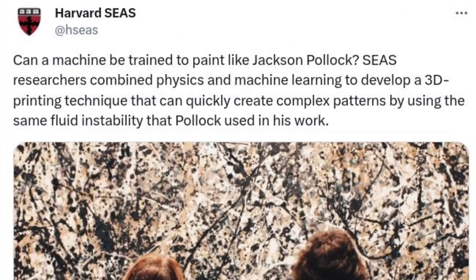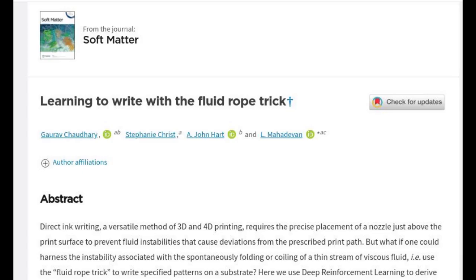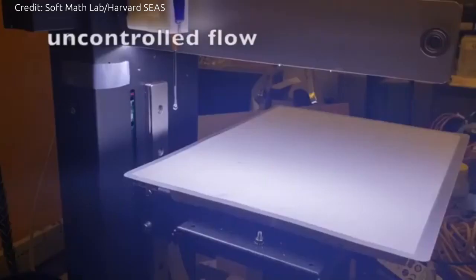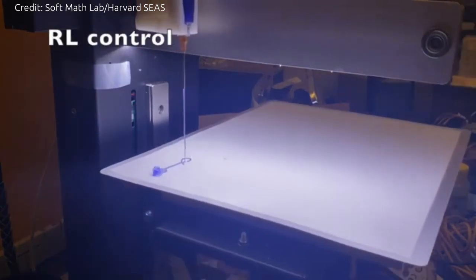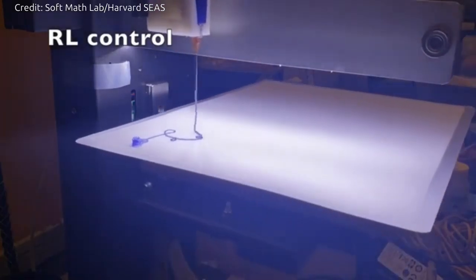Harvard researchers combined physics and machine learning to develop a new 3D printing technique that can quickly create complex physical patterns, including replicating a segment of a Pollock painting, by leveraging the same natural fluid instability that Jackson Pollock used in his work. The research is published in SoftMatter.